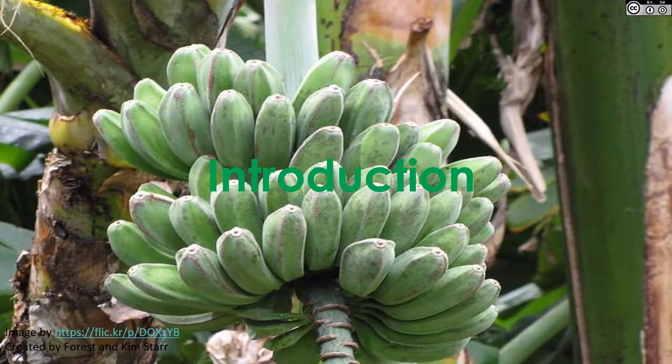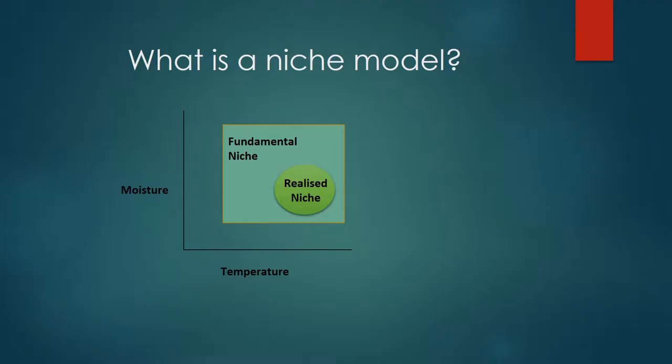What exactly is a niche model? This is a diagram of an ecological niche model, which represents the place or function of an organism within its ecosystem, determined by two variables: temperature and moisture. A niche model is an ecological construct defining the optimum environment for growth, reproduction and survival of a species. Niches are defined by three main factors: substrate, microclimate and competition. Ecological niche modeling predicts the distribution of species in geographic space.